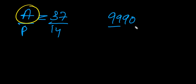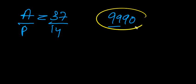In a class, the ratio of students appeared to students passed is 37 to 14. The total number of students who appeared is 9990. Let's take x as the common multiplier for the ratio.